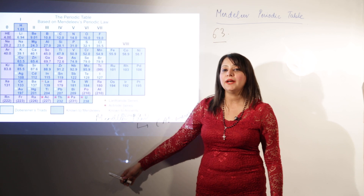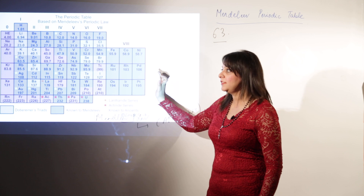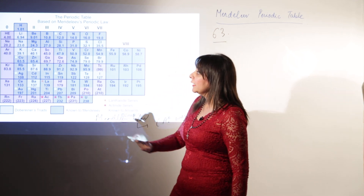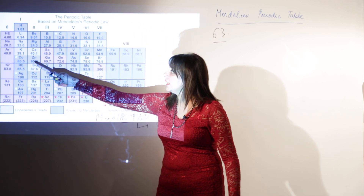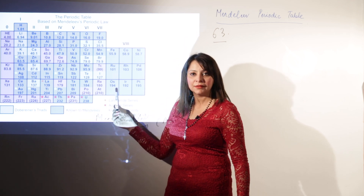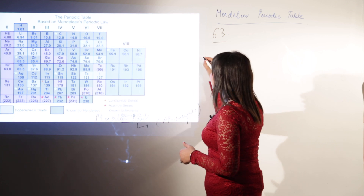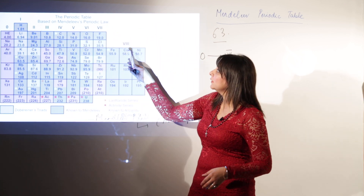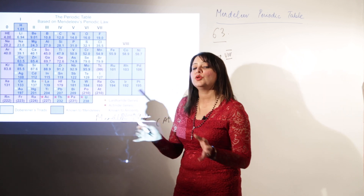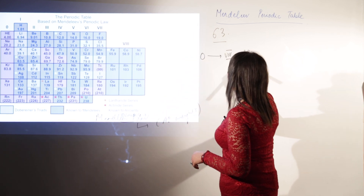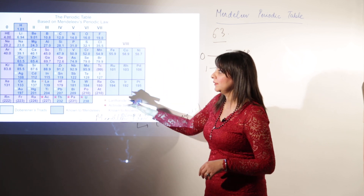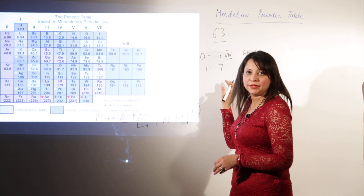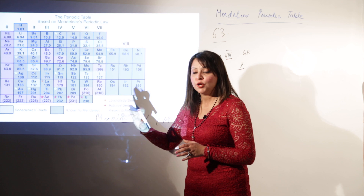Mendeleev's periodic table comprised vertical columns called groups and horizontal rows called periods. There were nine groups, numbered zero to eight in Roman numerals. There were seven periods. So the table had groups numbered zero to eight and periods one to seven, and he arranged the 63 known elements accordingly.